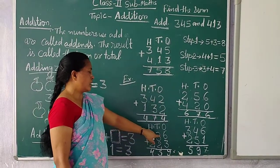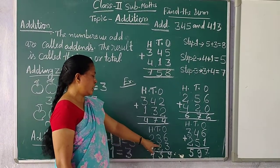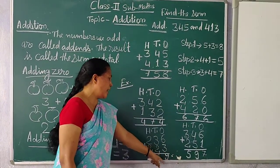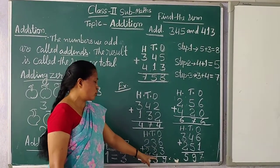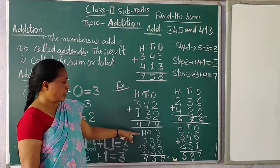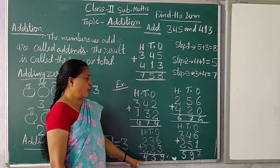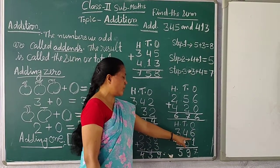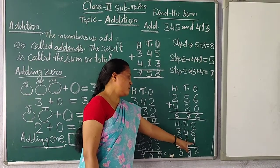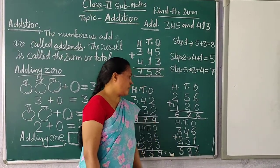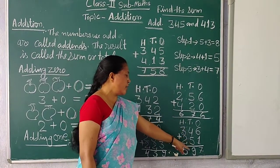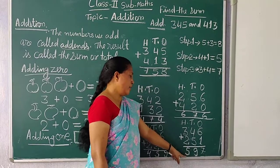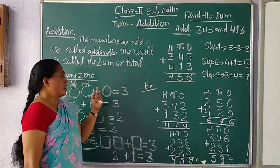And this is two hundred thirty-six plus two hundred twenty-three. Then: ones place three plus six equals nine, tens place three plus two equals five, hundreds place two plus two equals four. And this is three hundred forty-six plus two hundred fifty-one: six plus one equals seven, four plus five equals nine, three plus two equals five. So these are the addition numbers.